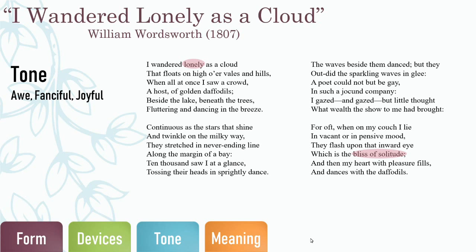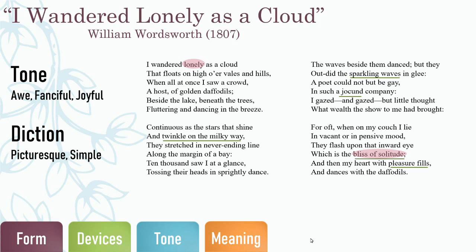We also have to look at diction, or word choice, when analyzing tone. Wordsworth uses picturesque, simple diction. He uses short, easy-to-understand words such as 'twinkle,' 'sparkling,' 'solitude,' and 'pleasure' to show the simple pleasure he experiences when witnessing this scene.